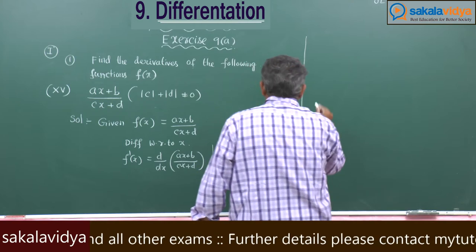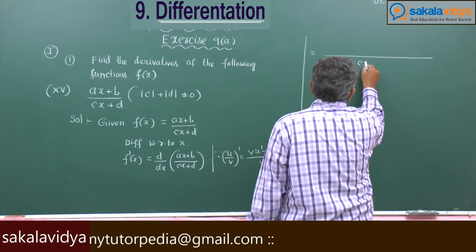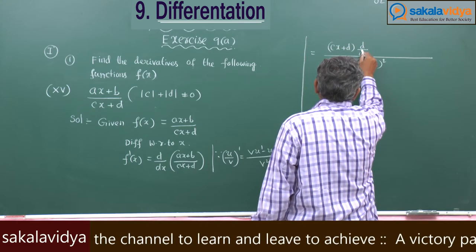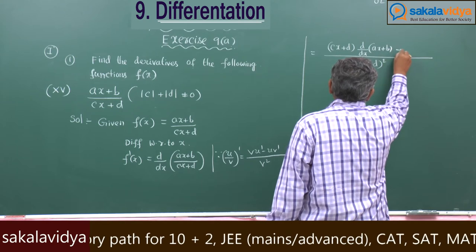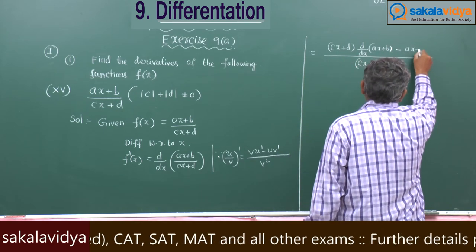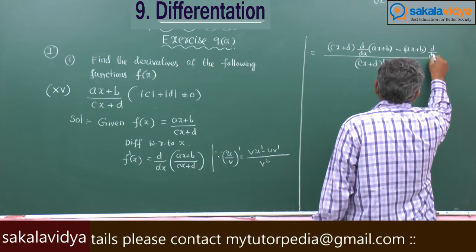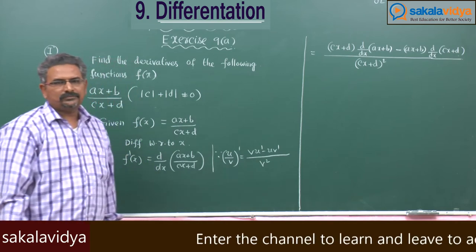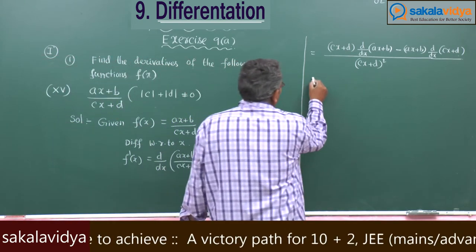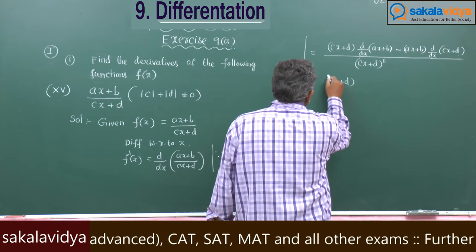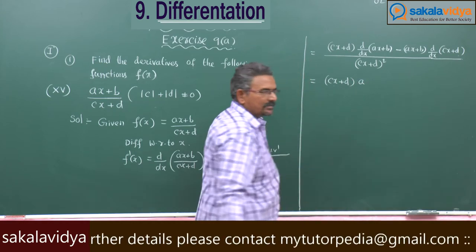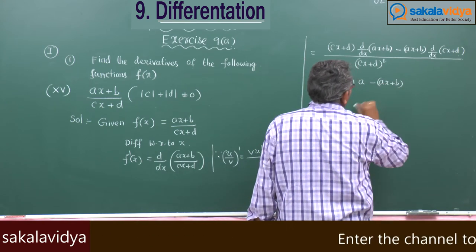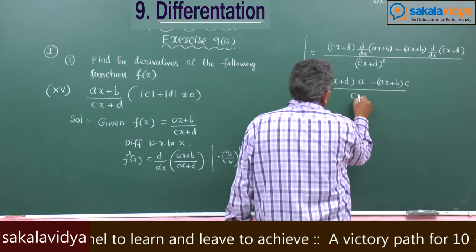So this is equal to, in the numerator: (cx + d) · d/dx(ax + b) minus (ax + b) · d/dx(cx + d), all over (cx + d)². The derivative of (ax + b) is a, and the derivative of (cx + d) is c.